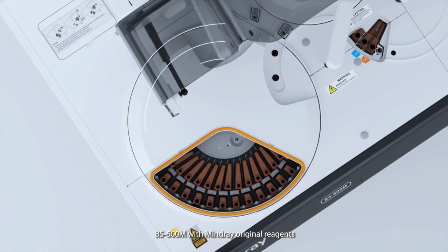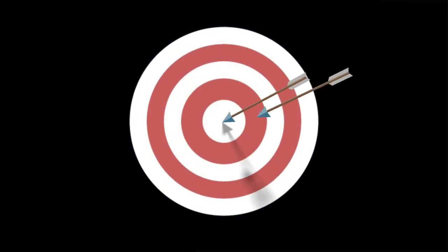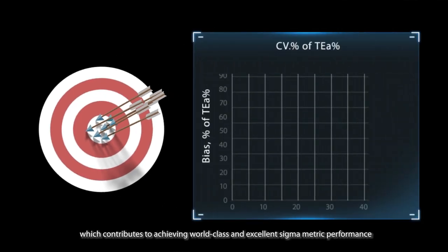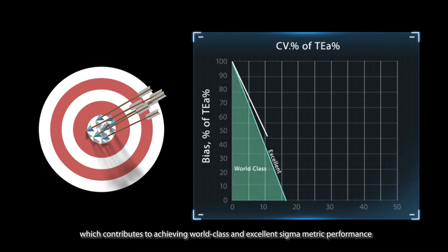BS 600M with Mindray original reagents can lower the inaccuracy and imprecision, which contributes to achieving world-class performance and excellent sigma metric performance.